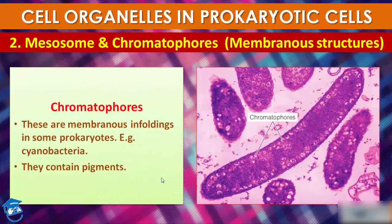Chromatophores: in some prokaryotes like cyanobacteria, there are membranous extensions into the cytoplasm called chromatophores. They contain pigments — 'chromato' means color, and 'phore' means bearer of pigments. So chromatophores carry colored pigments. Both mesosome and chromatophores are membranous structures, so don't get confused between them.